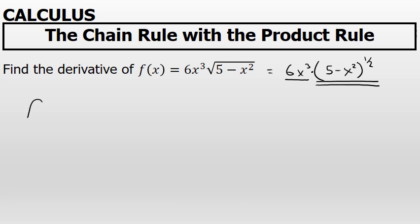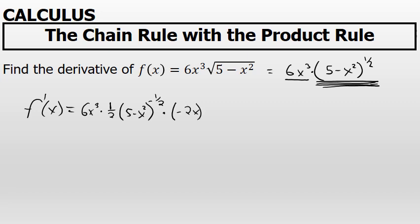Let's differentiate according to the product rule. The product rule states that the derivative of a function with two factors is the first factor unchanged — 6x to the third — times the derivative of the second factor. The derivative of 5 minus x squared to the one-half requires the chain rule: bring the one-half in front, decrease the power to negative one-half, then multiply by the derivative of 5 minus x squared, which is negative 2x.